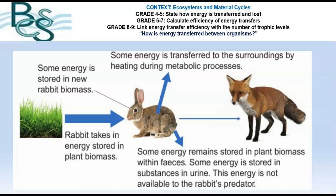So that biomass, that chemical energy, that stored energy that was originally glucose in the grass, is taken in by the rabbit. Some is converted into rabbit muscle, bone, fur, etc., and so the fox could eat it. But some of it is lost.